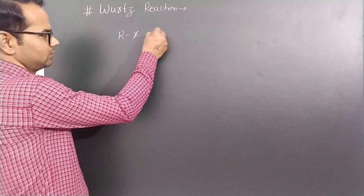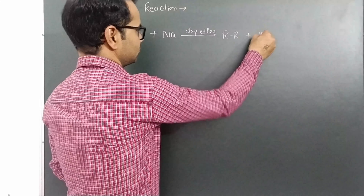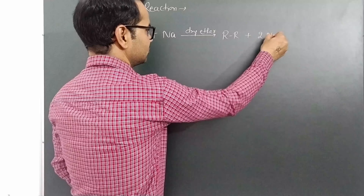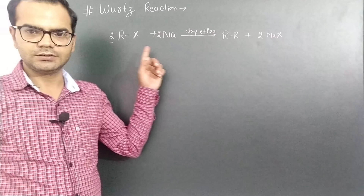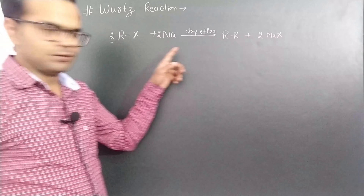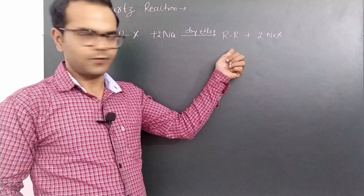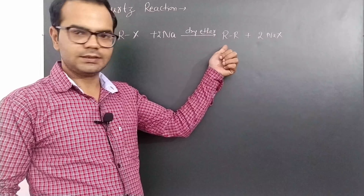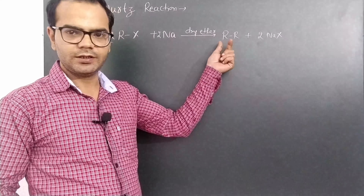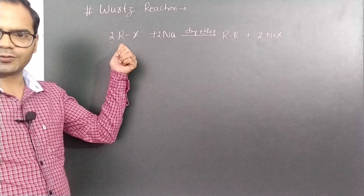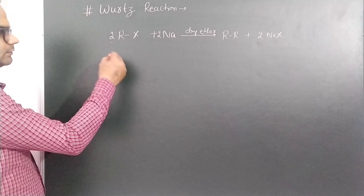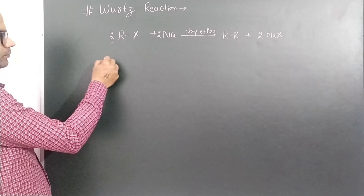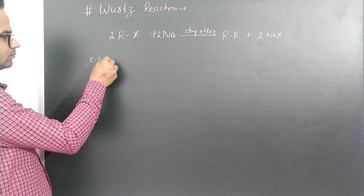Actually, this is a doubling reaction. Two alkyl halide molecules are used. As a result, an alkane is formed, and this alkane is a symmetrical alkane, because both R groups are the same.